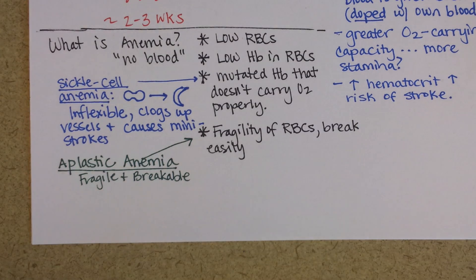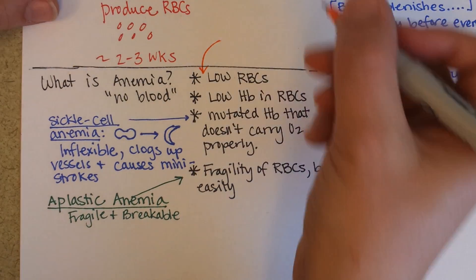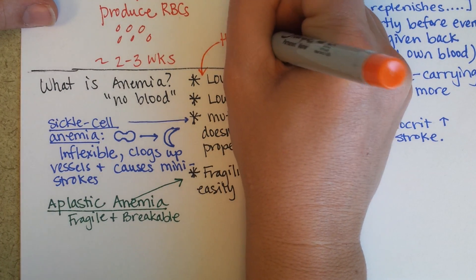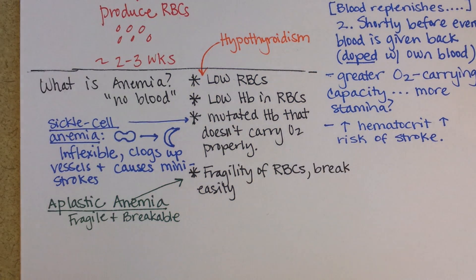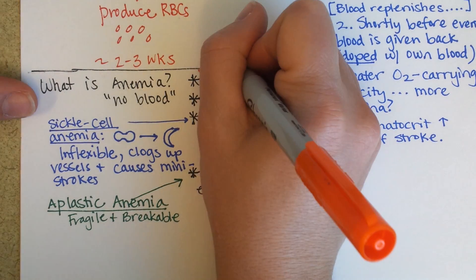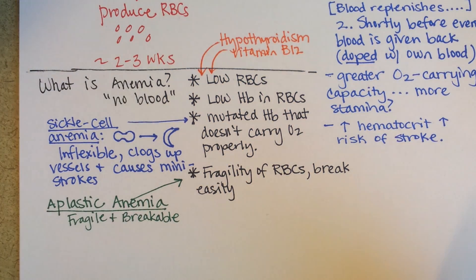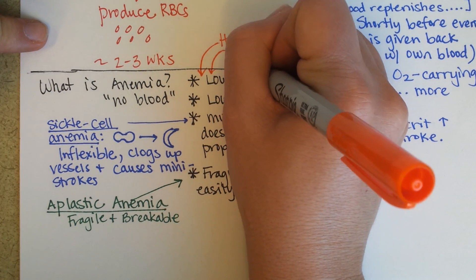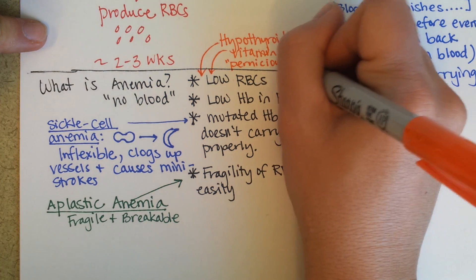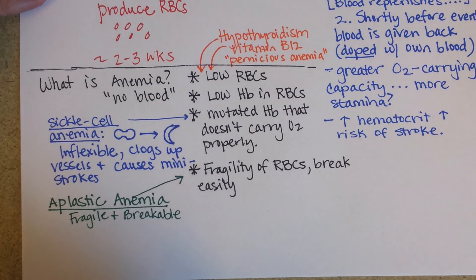Low red blood cells might also be caused by hypothyroidism, because thyroxin increases the production of red blood cells, so hypothyroidism would theoretically — and does — cause anemia. Vitamin B12 deficiency is another cause, since B12 is required for red blood cell production. This is called pernicious anemia, and intrinsic factor is required for the absorption of vitamin B12.